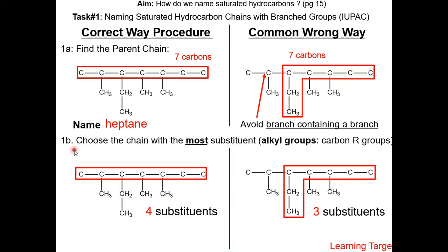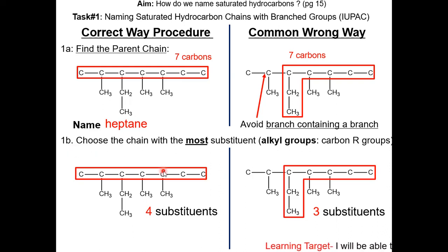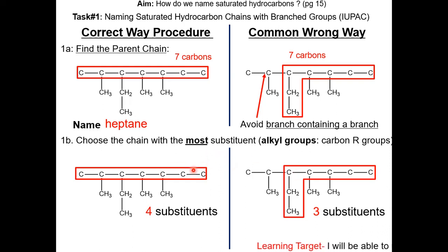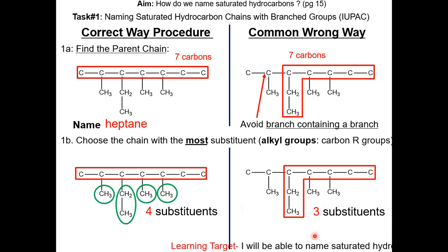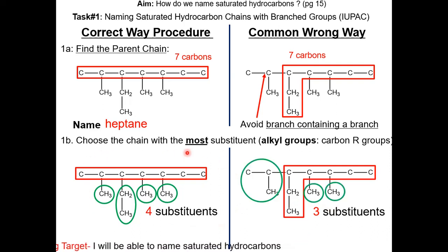In step 1b, if there are 2 possible parent chains that are the same carbon length, you want to pick the chain with the most substituents. In this example, both parent chains are 7 carbons long, but this parent chain has 4 substituents while this parent chain has only 3. Therefore, the one with 4 substituents is the better choice.